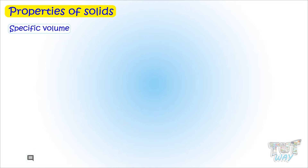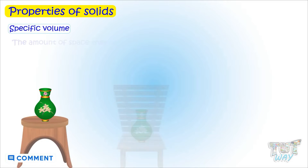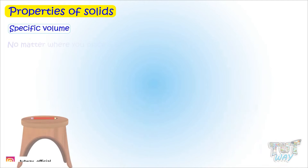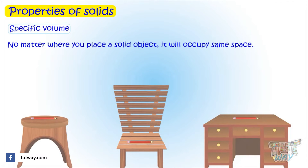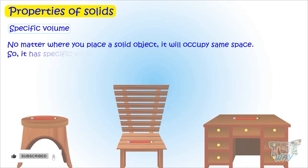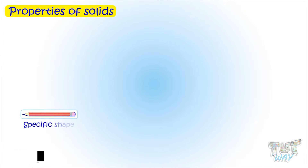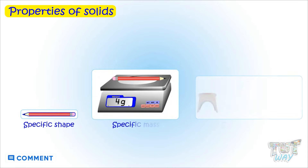The next property is specific volume. Solids have a specific volume — the amount of space they occupy does not change no matter where you place them. The same pencil placed anywhere will occupy the same space; it will not occupy less space in one place or more space in another. It will always occupy the same space. So we learn that solids have specific shape, mass, and volume.